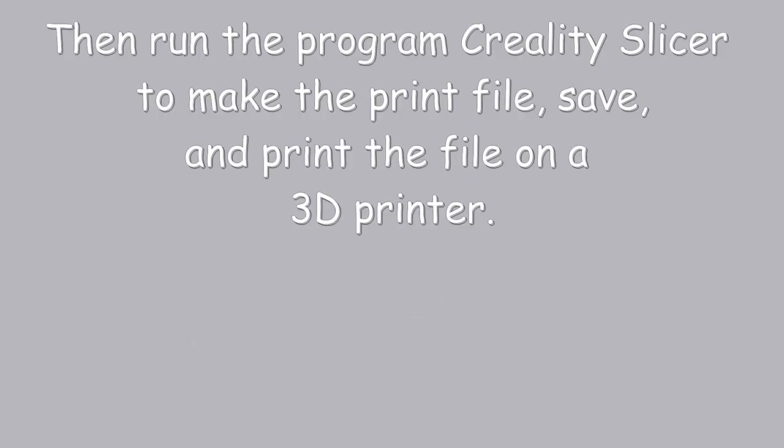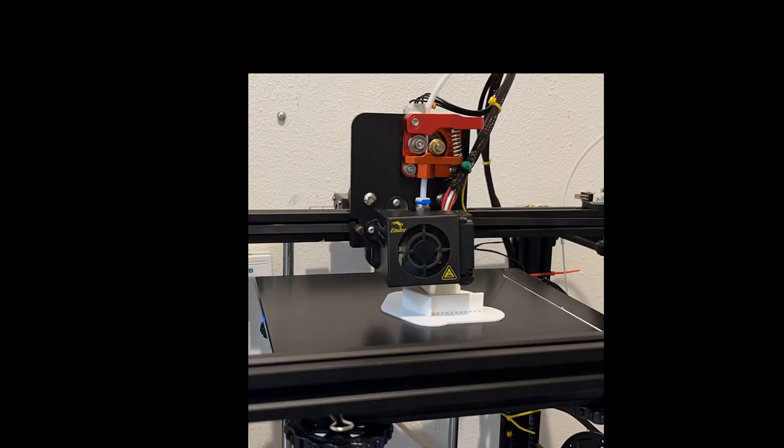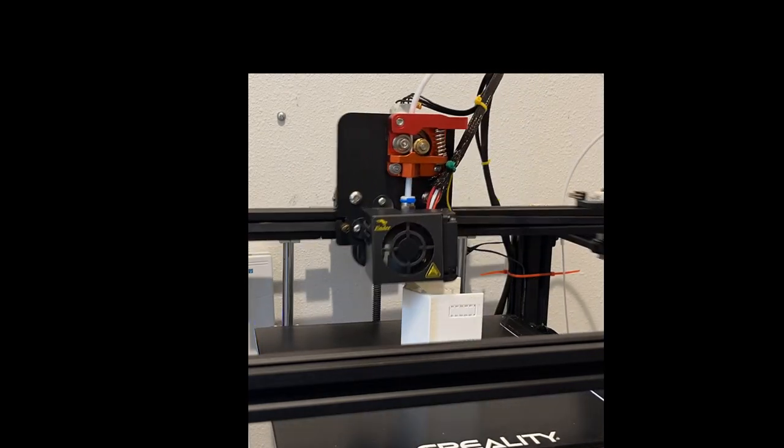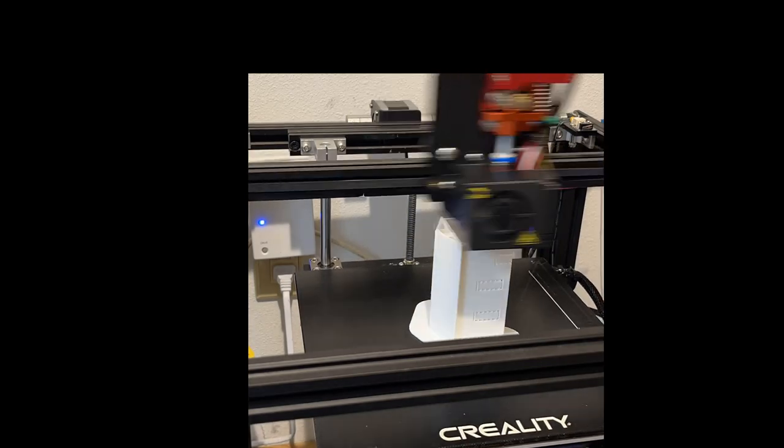Load your model file into your slicer program. I use Creality slicer which is free. Make your print file, load that onto the printer and we're ready to print. So here we are printing the part on my machine. The actual print process takes six and a half hours so this has been speeded up considerably.